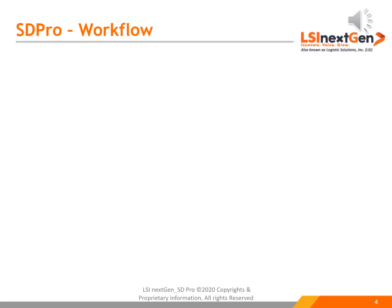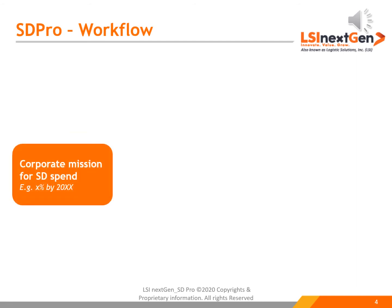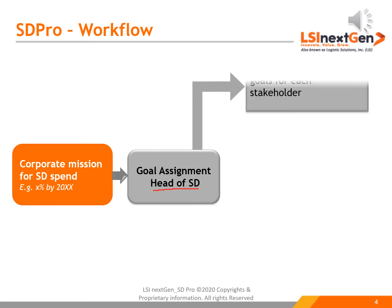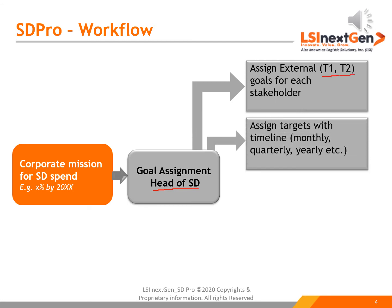In the SD Pro workflow, a corporate mission for supplier diversity spend is set by top management — for example, 20% SD spend by a given year. That goal is assigned to the head of supplier diversity, who further assigns goals to stakeholders at tier one and tier two levels, with periodic timelines such as monthly, quarterly, and yearly.